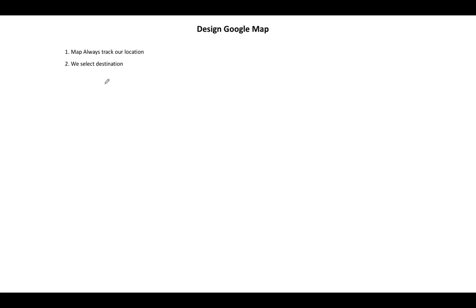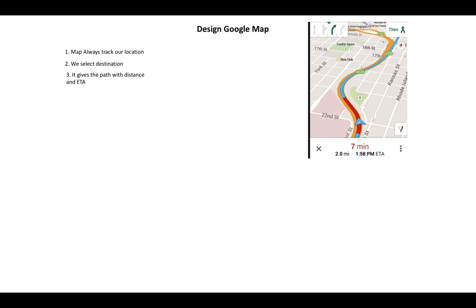Another requirement is path suggestion. When the user selects a destination in our map system, based on the longitude and latitude of the source and destination, the system should suggest an optimal path to reach the destination. The third primary requirement is ETA — once our map system shows the path, the main attributes are distance and ETA. These are the two prime attributes while providing the path to the user.